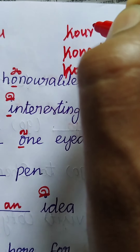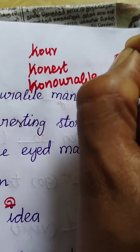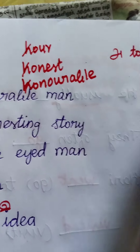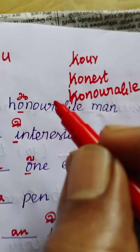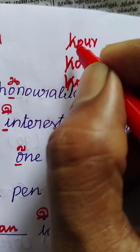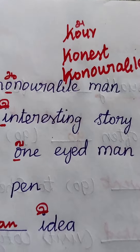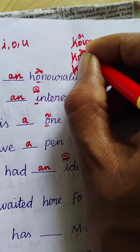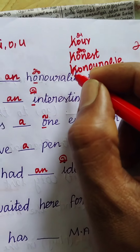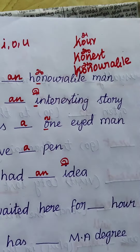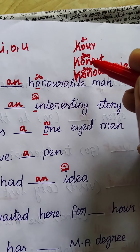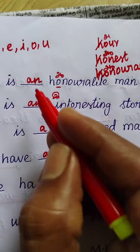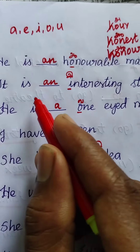Vowel sounds range from certain phonetic sounds. When the pronunciation comes with a vowel sound, we use the article 'an'. So: H silent → O pronunciation → 'honest'; H silent → O pronunciation → 'honorable'. These three words are pronounced with a vowel sound, hence we use 'an'.